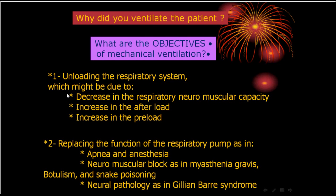To unload the respiratory system — this might be due to a decrease in neuromuscular capacity, when the patient has some problem with the muscles or nerves and cannot cope. The respiratory pump cannot do the job, resulting in CO2 retention or hypoxia. Or increasing the afterload — like when the workload on the respiratory pump is large due to spasm or consolidation of the lung with decreased compliance, making it difficult for the pump and causing fatigue.